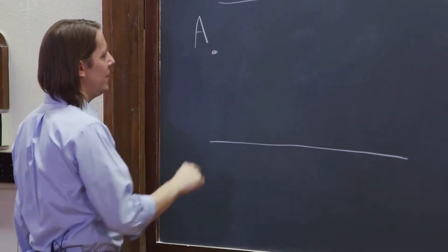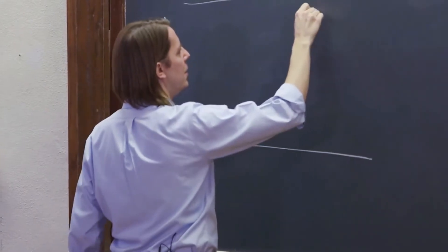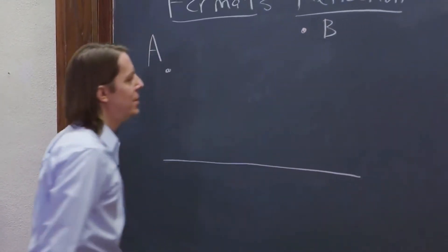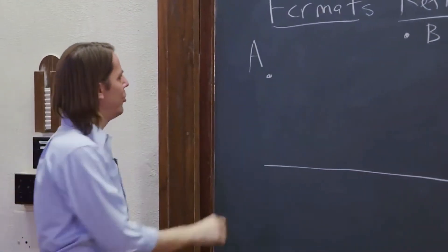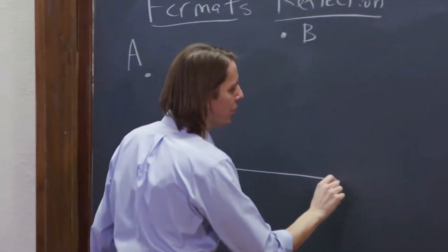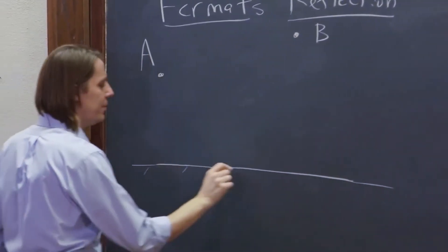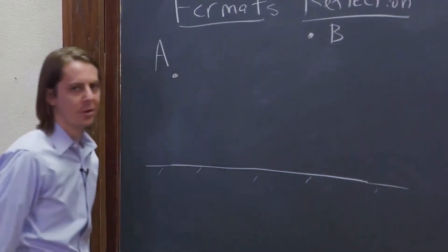So we have some light, and it's going to go from point A to point B, say like that. Point A is, and both points are above this mirror that it's reflecting off of. So we've got a reflecting mirror down here.